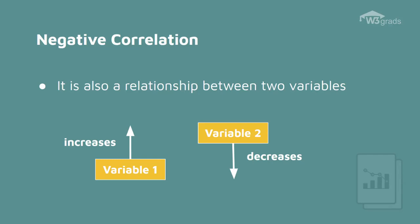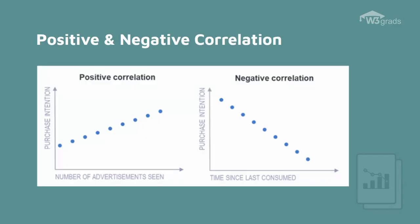The following graph should give you a clear idea on the positive and negative correlations. Here, the number of advertisements seen is on the x-axis and purchase intention is on the y-axis. For positive correlation, the values on the x-axis increase with the y-axis. However, for negative correlation, the value on the y-axis decreases with the increase in value on the x-axis.